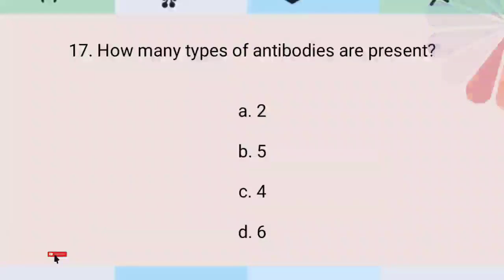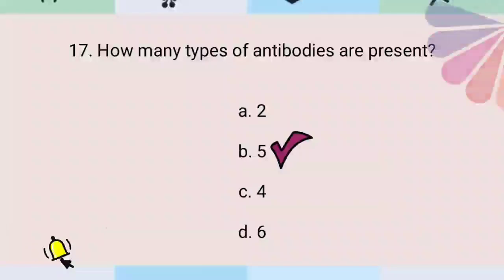How many types of antibodies are present? There are 5 types of antibodies.